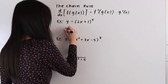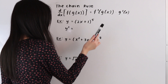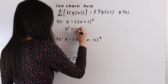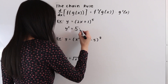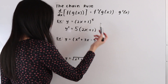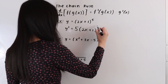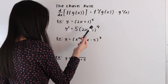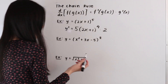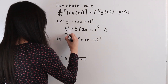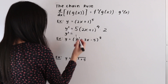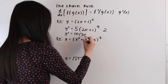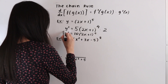Let's find the derivative. y prime is equal to: we start by taking the derivative of our outer function, the power of 5, using the power rule — bring the 5 down, keep everything inside the same as 2x plus 1, subtract 1 from the exponent so we get to the 4th power, then multiply by the derivative of the inner function. The derivative of 2x plus 1 is just 2. Simplifying by multiplying 5 and 2 together gives us y prime is equal to 10 times the quantity 2x plus 1 to the fourth power. This is our final answer.